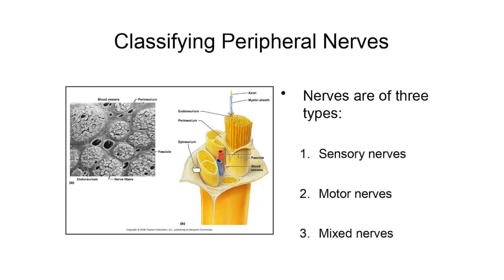Fascicles are bundles of axons from neurons. When you have a mixed nerve, some of the fascicles are going to be sensory — containing neurons that carry electrical signals towards the brain and spinal cord. Other fascicles within that nerve consist of motor neurons carrying electrical signals away from the brain and spinal cord towards peripheral parts of the body. You would never see sensory and motor neurons mixed within a single fascicle. In a mixed nerve, the organization is at least by fascicle — some fascicles are motor and some are sensory.